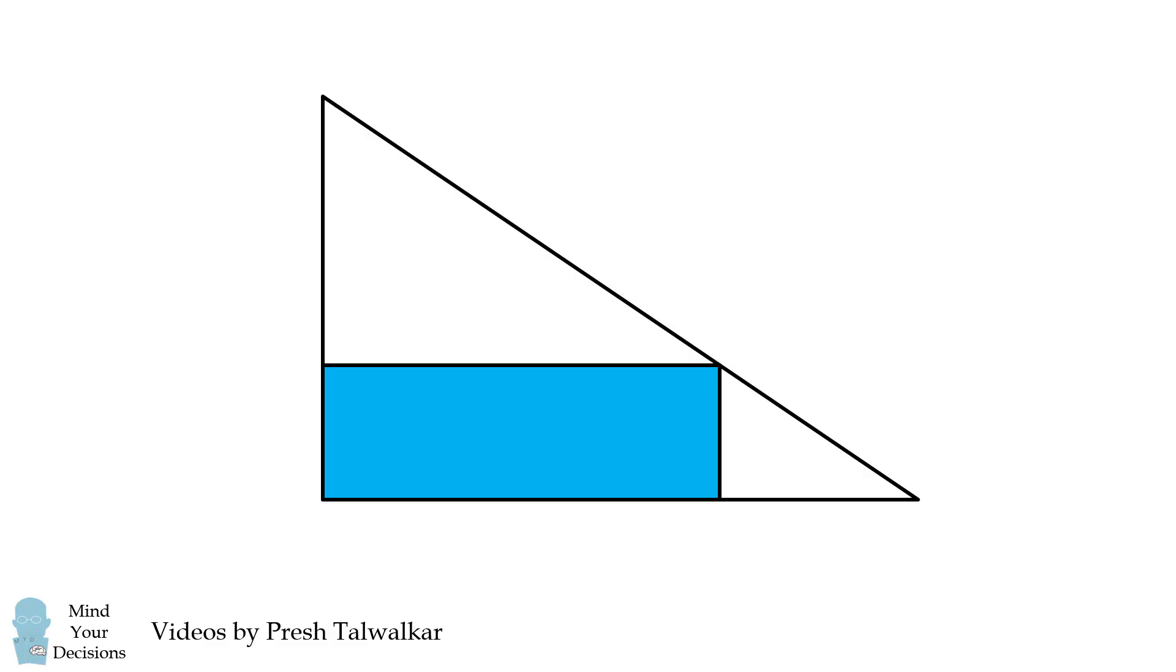The distance from the top of the rectangle to the top vertex of the triangle is equal to 4 units. The distance from the right side of the rectangle to the right vertex is equal to 3 units. Part 1: What is the area of the rectangle equal to?